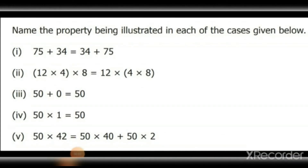In this class we learned the four properties of whole numbers: commutativity of addition and multiplication; associativity of addition and multiplication; distributivity of multiplication over addition or subtraction; and identity for addition and multiplication. For your homework, name the property being illustrated in each case given below. I'll do the first one: 75 plus 34 equals 34 plus 75 — this illustrates the commutative property of addition. You can do the others and submit your homework on time. I hope you all understood this session. Thank you so much, kids.